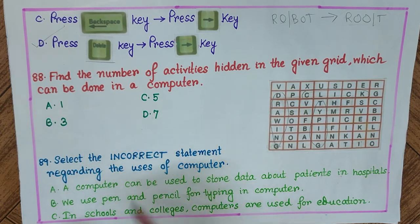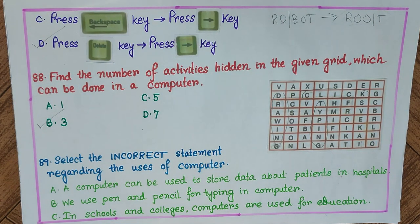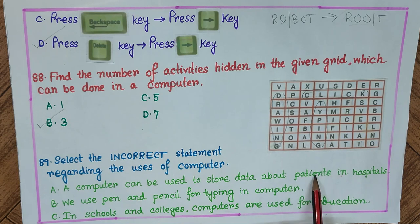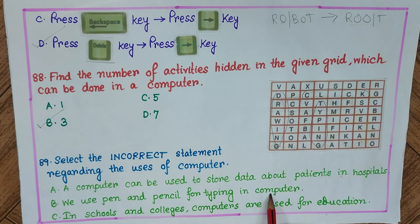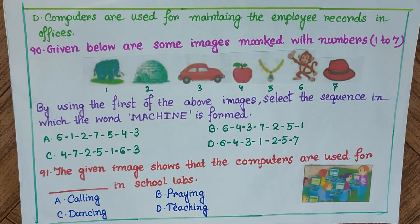Question 89: Select the incorrect statement regarding the uses of a computer. A) A computer can store data about patients in a hospital — correct. B) We use pen and pencil for typing in a computer — incorrect, this is the wrong statement. C) In schools and colleges computers are used for education — correct. D) Computers are used for maintaining employee records in offices — correct. The answer is B.